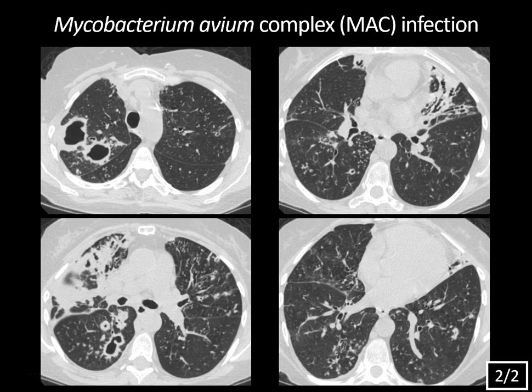MAC is a non-tuberculous mycobacterial infection seen most commonly in patients with some underlying pulmonary disease, but also in immunocompromised patients. There are two major imaging appearances. One is the fibrocavitary form, seen more commonly in older men with COPD, and it has an imaging appearance similar to reactivation TB — upper lobe cavities, scattered areas of tree-in-bud nodularity, apical pleural thickening, and satellite nodules. The other form is the bronchiectatic form, also known as Lady Windermere syndrome, typically in elderly women without COPD who may chronically suppress the cough reflex, with bronchiectasis in the lingula and right middle lobe with extensive tree-in-bud nodularity. And then there's the mixed form, which has both fibrocavitary and bronchiectatic features — that's what we had in this case.